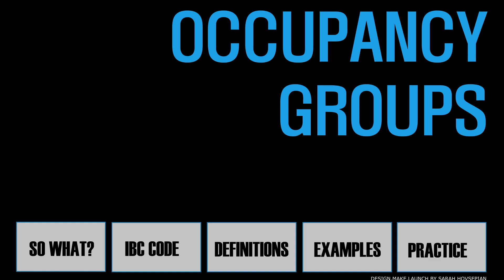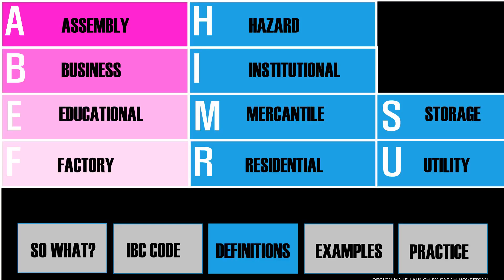This is the second video for occupancy groups, so if you haven't seen the first video then click here for part one. In this video we'll continue to master the essential occupancy groups for the rest of the most common building types. In part one we reviewed A, B, E, and F occupancies. Let's continue with the next category.